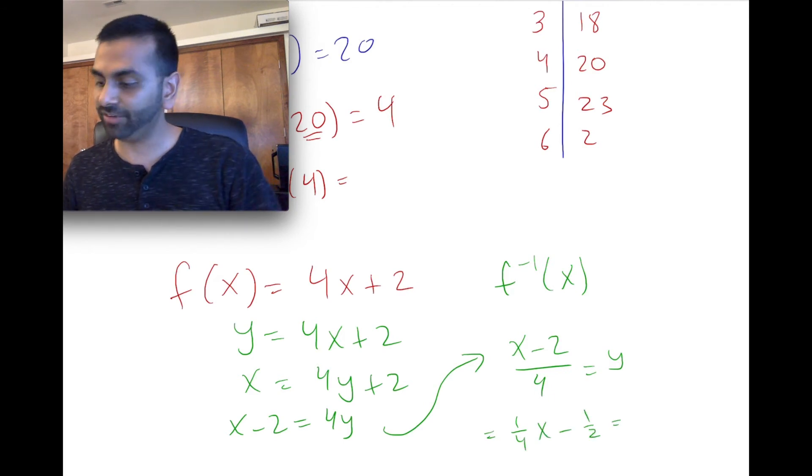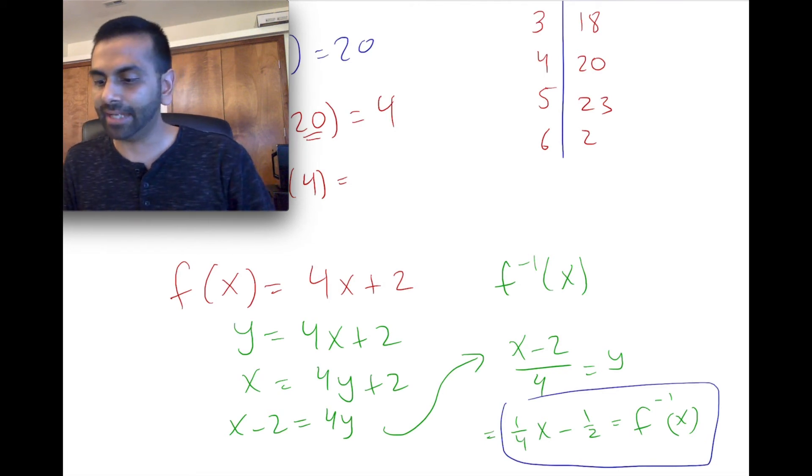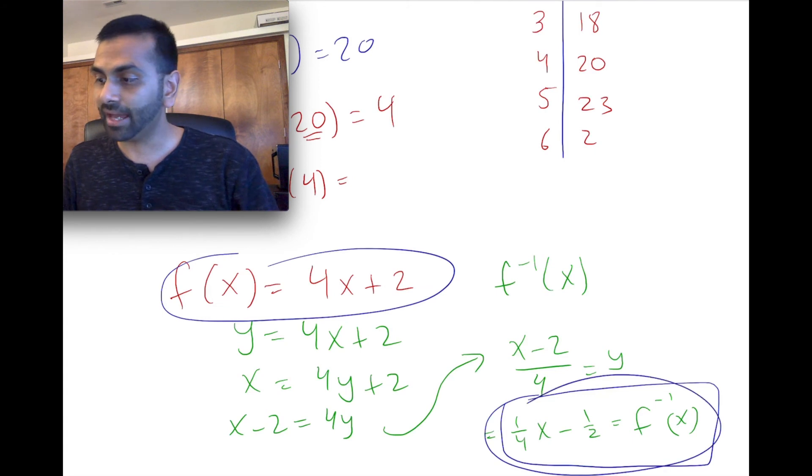But our y, the notation now, this is like our original input, right? That was our original x. So that's the notation is this, f inverse of x. That's the notation. And so this is your inverse function. Notice one thing is the inverse function of a line is always another line.